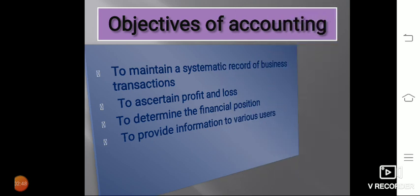Next are the objectives of Accounting. Your first objective is to maintain a systematic record of business transactions. The main objective of Accounting is to keep a complete record of business transactions according to specified rules. Complete records of all business transactions help to avoid the possibility of omission and fraud. For this purpose, all business transactions are first recorded in a journal or subsidiary book and then posted into a ledger.